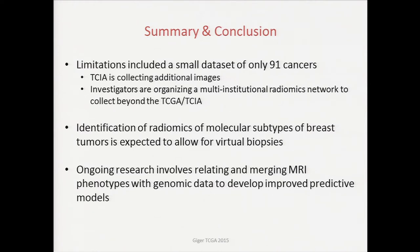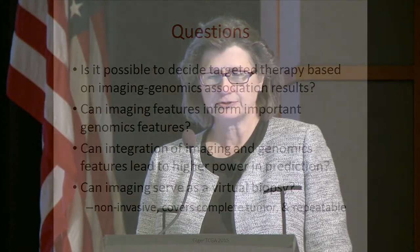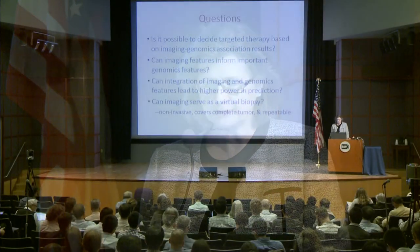Identification of radiomics of molecular subtypes of breast tumors is expected to allow virtual biopsies to augment actual biopsies, and ongoing research involves relating and merging MR phenotypes with genomic data to develop improved predictive models. I'd like to end with these questions: Is it possible to decide targeted therapy based on imaging and genomics association results? Can imaging features inform important genomic features? We've used imaging and genomic association results to direct analysis to improve statistics rather than going to GWAS. Can integration of imaging and genomic features lead to higher power in prediction? And can imaging serve as a virtual biopsy — being noninvasive, covering the complete tumor, and being repeatable?